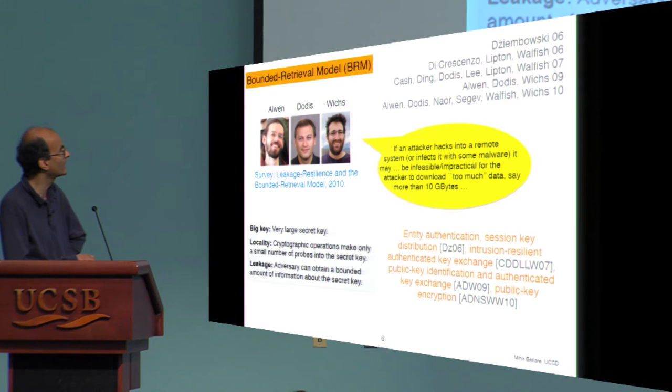And this quote by Alvin Dodis and Wicks in a survey in 2010 says exactly the same thing. That if you imagine that the malware can exfiltrate, say, 10 gigabytes, you put some limit on it, then by making keys longer than that, you might hope to get some security.